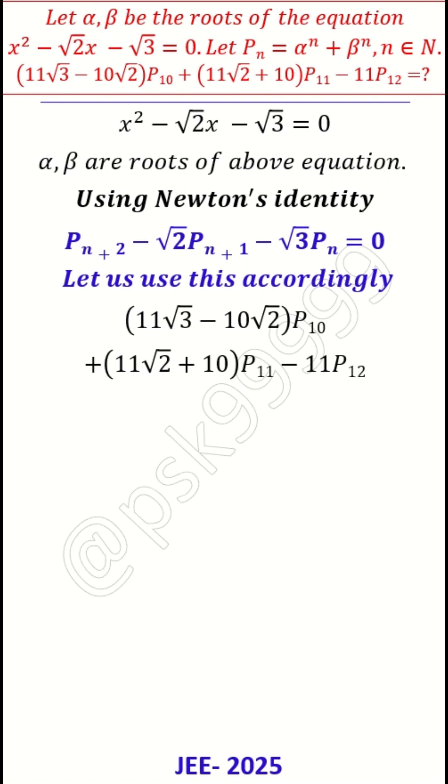This is the given expression for which we need to know the value. I will rearrange these terms into P_10, P_11, and P_12. This equals 11(√3P_10 + √2P_11 - P_12) + 10(-√2P_10 + P_11).